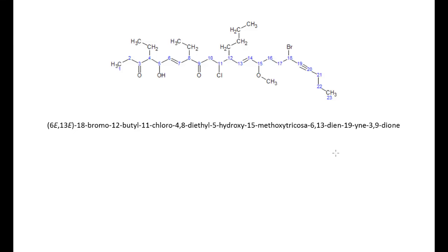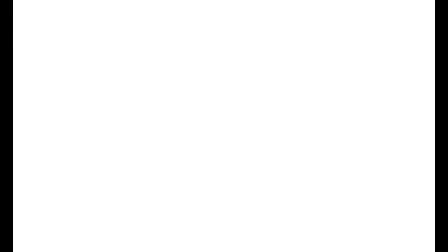I'm going to show two tables you need to know. The first is the number of carbons and the corresponding prefix: one carbon is meth, two is eth, three is prop, four is but, five is pent, six is hex. The second table lists homologous series — alkanes, alkenes, haloalkanes, alcohols, aldehydes, ketones, and carboxylic acids — along with their functional groups, prefixes, suffixes, and examples. Unit 1 covers the top portion and unit 2 the rest.